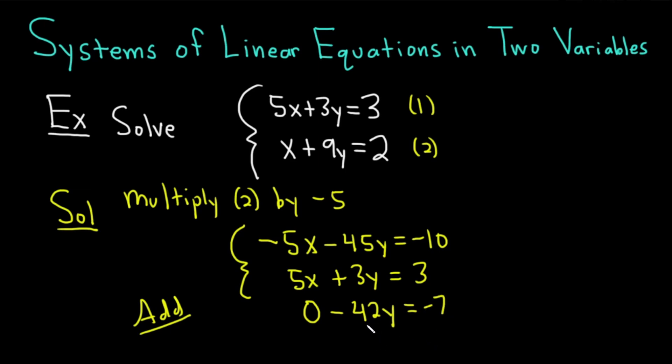So now what we can do is solve for y. We just divide by negative 42. So we end up with y equals, well, 7 goes into 42 six times, and we have two negatives, so we just get 1 over 6. I'm going to put that in a box.